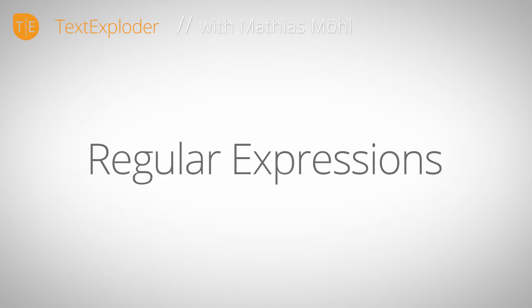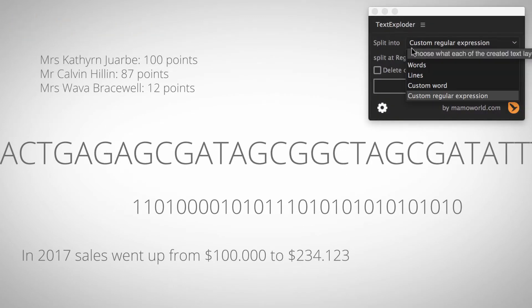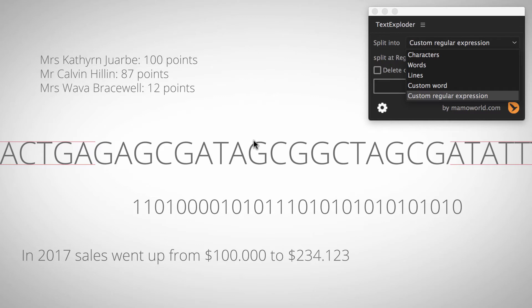This is Matthias Möhl for mamoworld.com, welcome to this After Effects tutorial where I want to show you some advanced features of the TextExploder tool. Namely, this tool can split text layers into individual characters, words, lines, or isolate a custom word. It also has a very powerful but complex feature of custom regular expressions, which allows more specific splits at very specific individual points with a lot of flexibility.